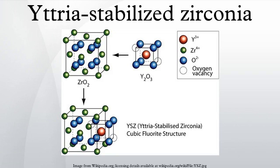Stabilization. Pure zirconium dioxide undergoes a phase transformation from monoclinic to tetragonal and then to cubic, according to the scheme: monoclinic, tetragonal, cubic, melt. Obtaining stable sintered zirconia ceramic products is difficult because of the large volume change accompanying the transition from tetragonal to monoclinic. Stabilization of the cubic polymorph of zirconia over a wider range of temperatures is accomplished by substitution of some of the Zr4+ ions in the crystal lattice with slightly larger ions, e.g., those of Y3+.